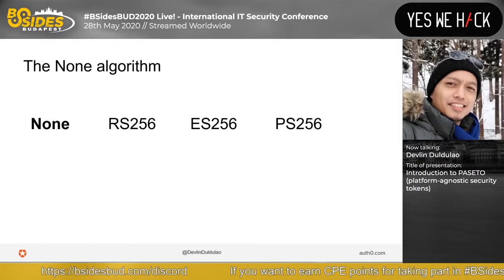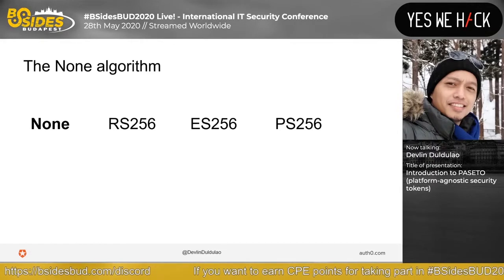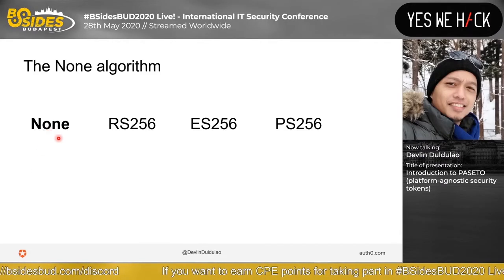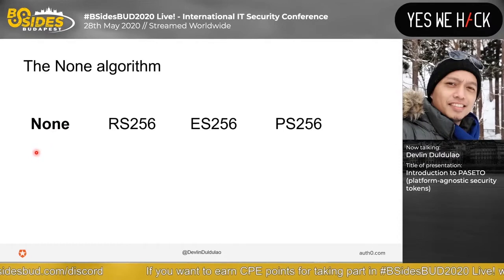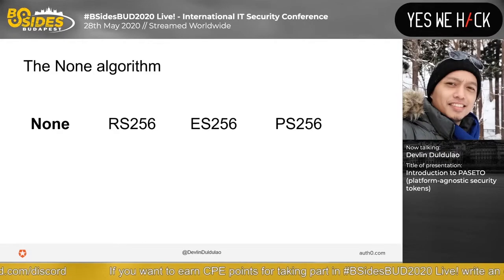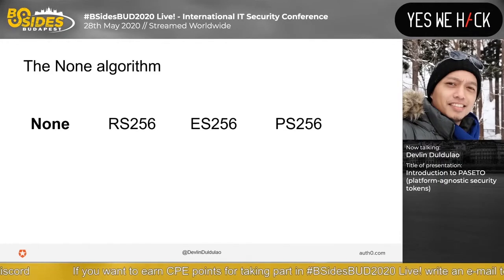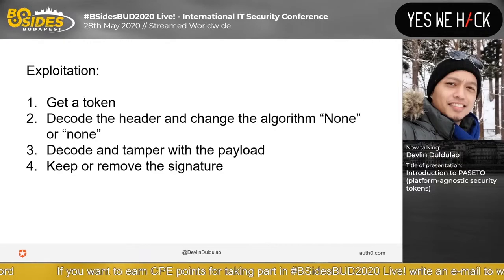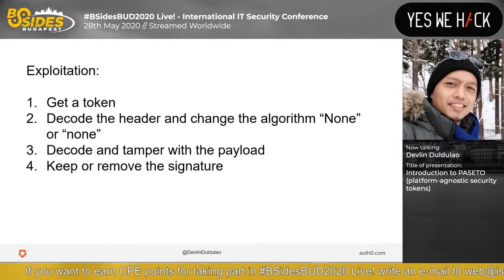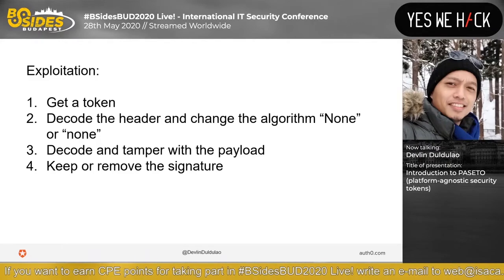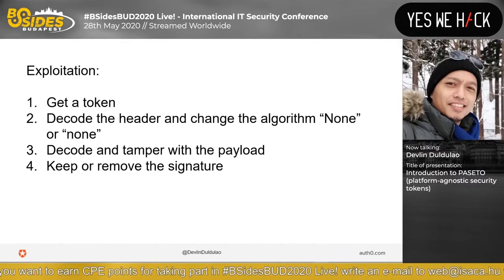The next vulnerability is the none algorithm. This used to be supported by default in a few libraries — basically, don't sign the token at all. Exploitation: get a token, decode the header and change the algorithm to 'none', decode and tamper with the payload, then keep or remove the signature. That's it.